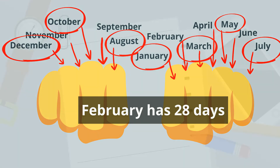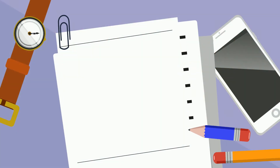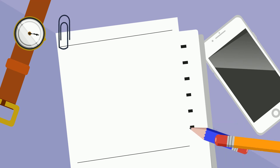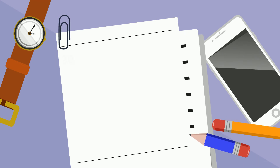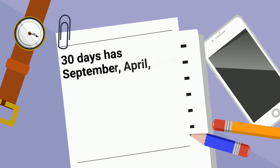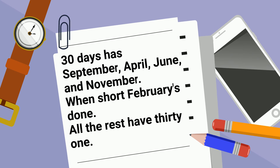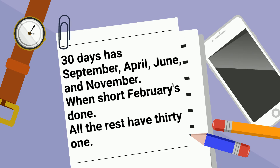Another method you can use is to memorize this simple little poem: 30 days has September, April, June, and November. When short February is done, all the rest have 31.